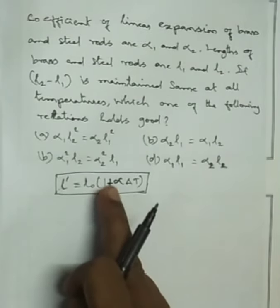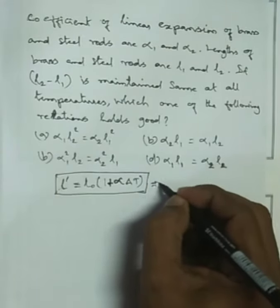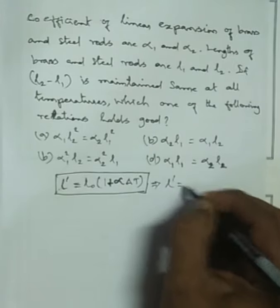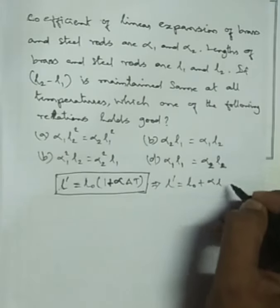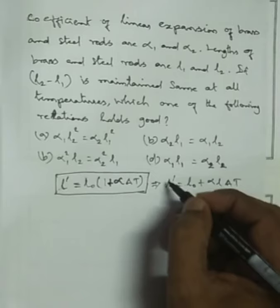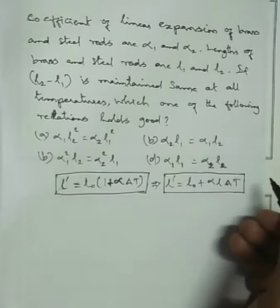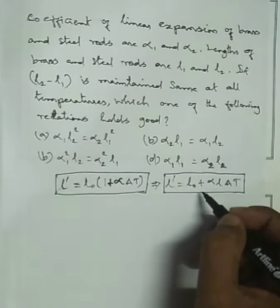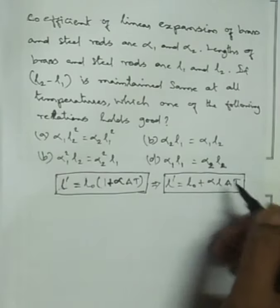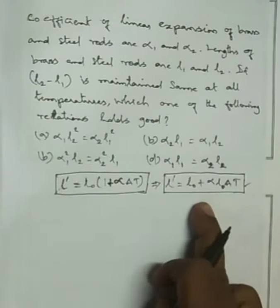Original length into 1 plus alpha delta t. If you have original length L0, then L dash equals L0 plus alpha L delta t. This is the base formula.